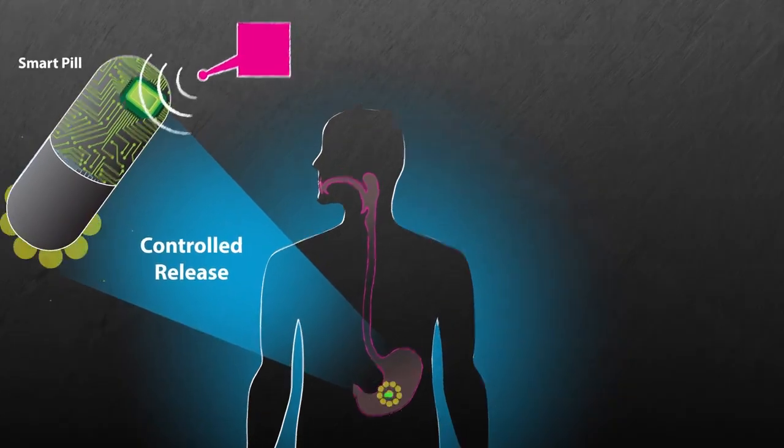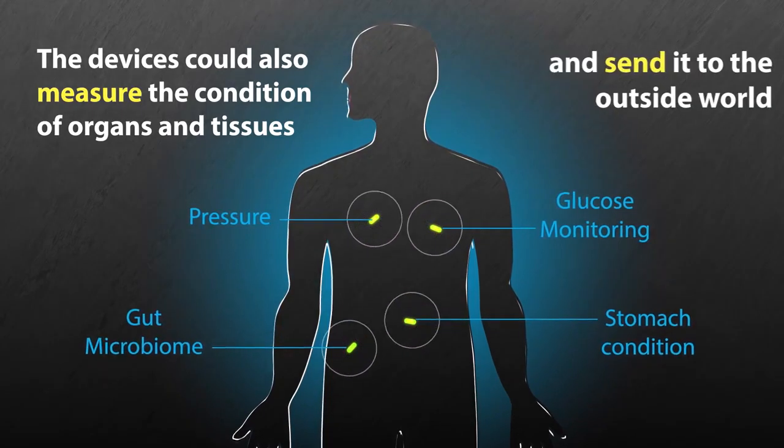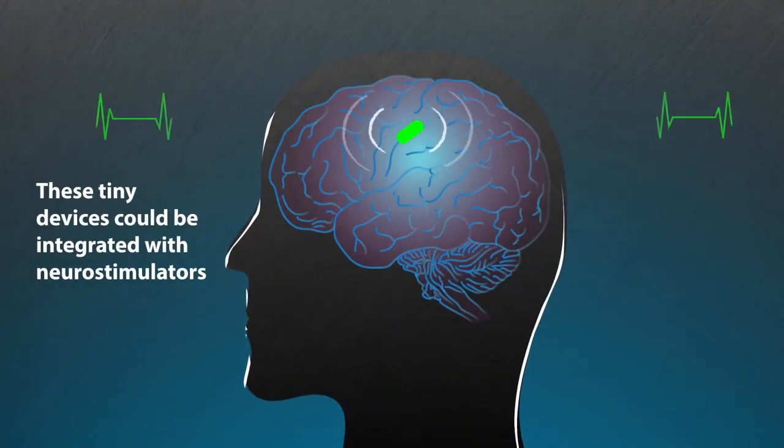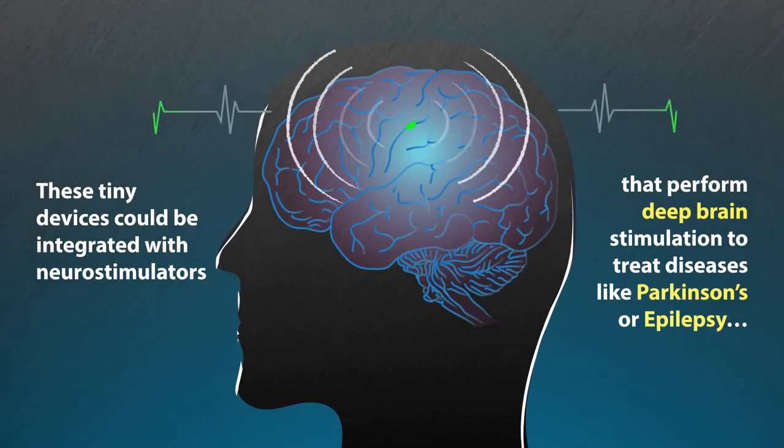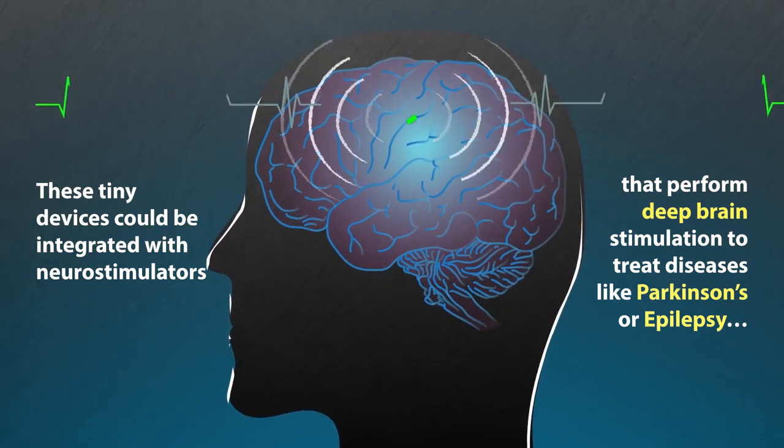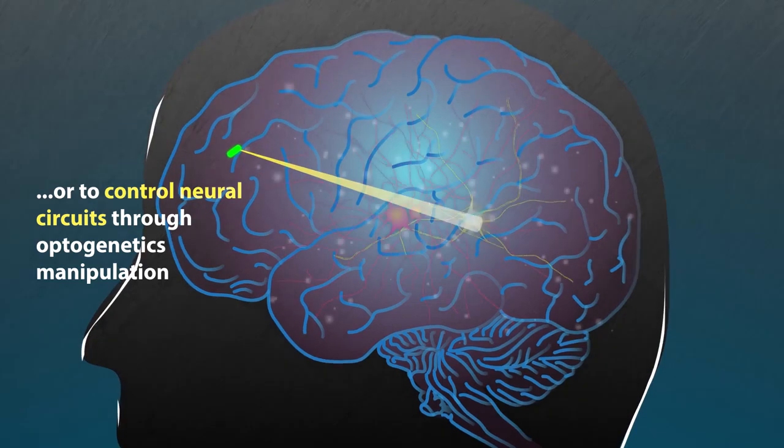The devices could also measure the condition of organs and tissues inside the body and send it to the outside world. These tiny devices could be integrated with neurostimulators implanted inside the brain to perform deep brain stimulation to treat diseases like Parkinson's or epilepsy, or to control neural circuits through optogenetics manipulation.